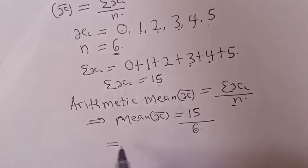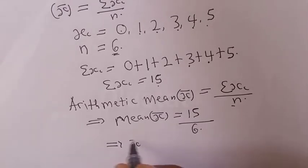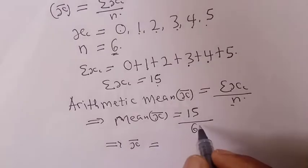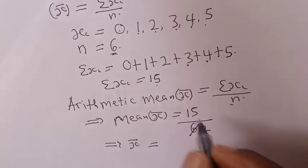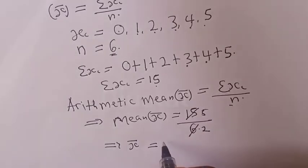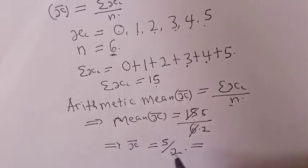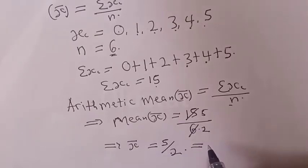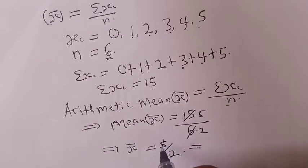This implies that our mean x bar is equal to 5 over 2, which is equal to 2.5. 2 goes into 15 that is 2 times, remain 1. That is 2 and 1 over 2.